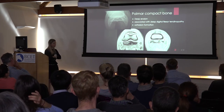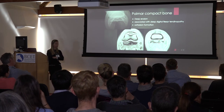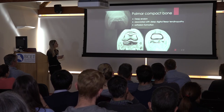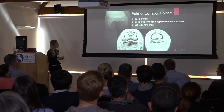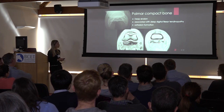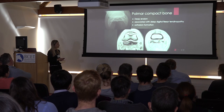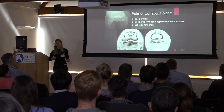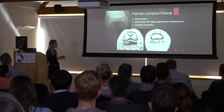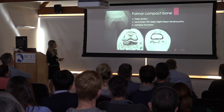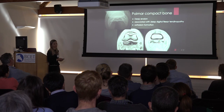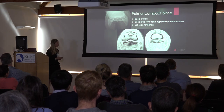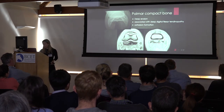If we see changes to the palmar cortex of the navicular bone, we must think about the deep digital flexor tendon. Deep erosions - lucencies in the flexor surface - correlate on MRI with extensive reaction in the navicular bone and tendon abnormalities. In many cases, adhesion between the tendon and navicular bone may be present, influencing prognosis. Navicular bursitis is also commonly associated with these tendon lesions.